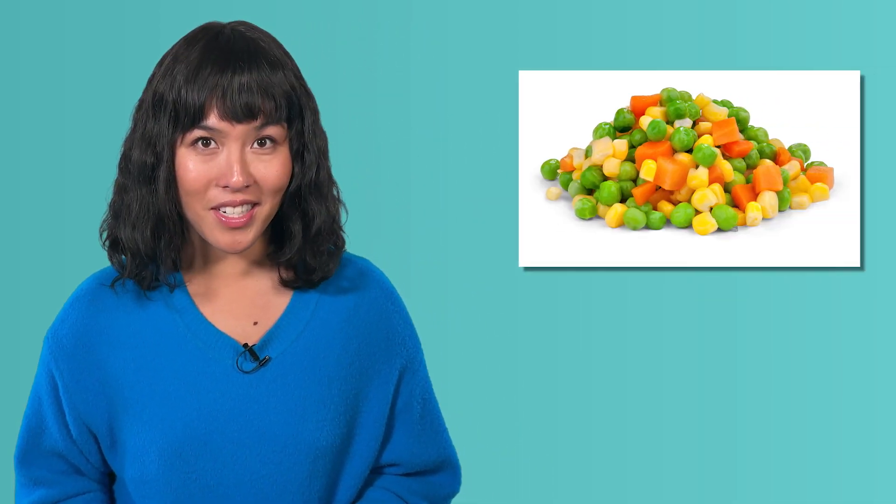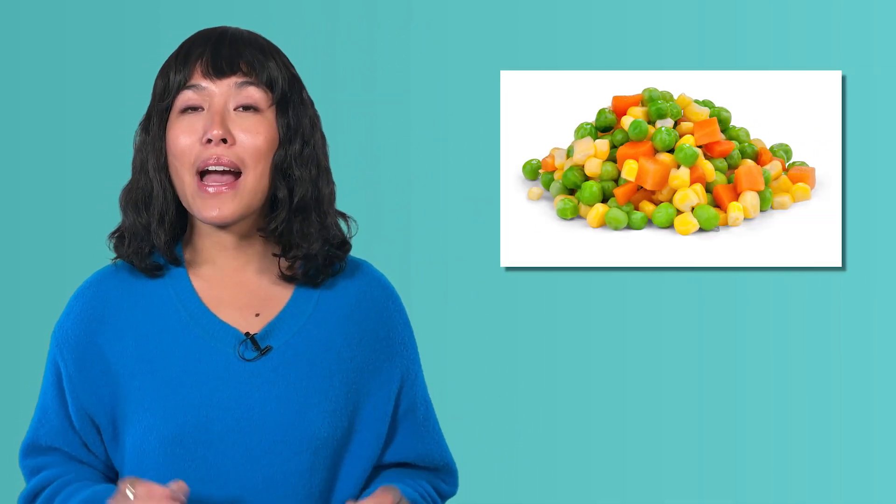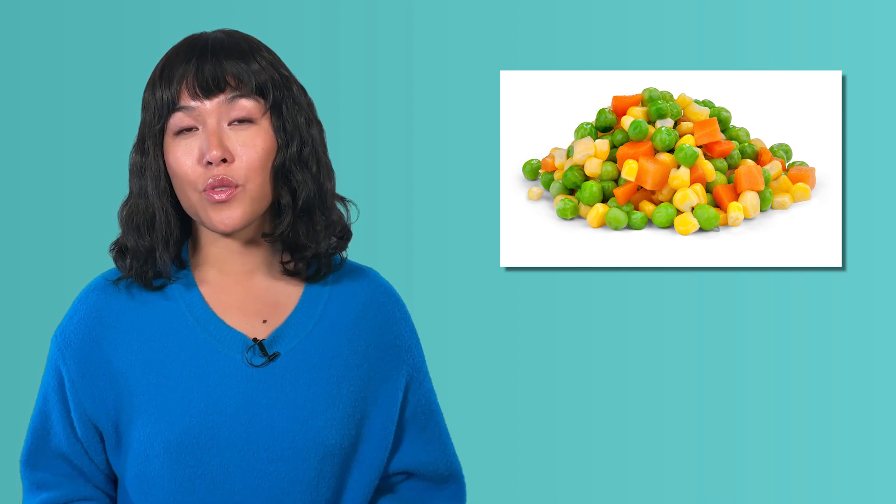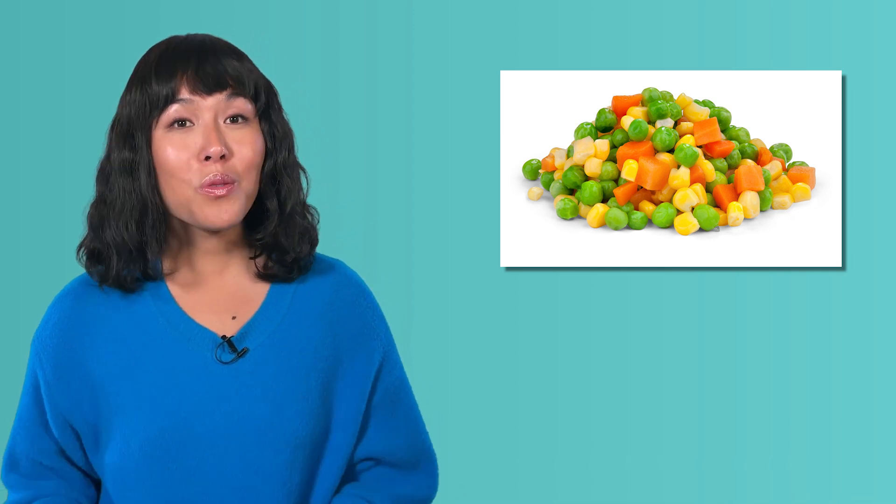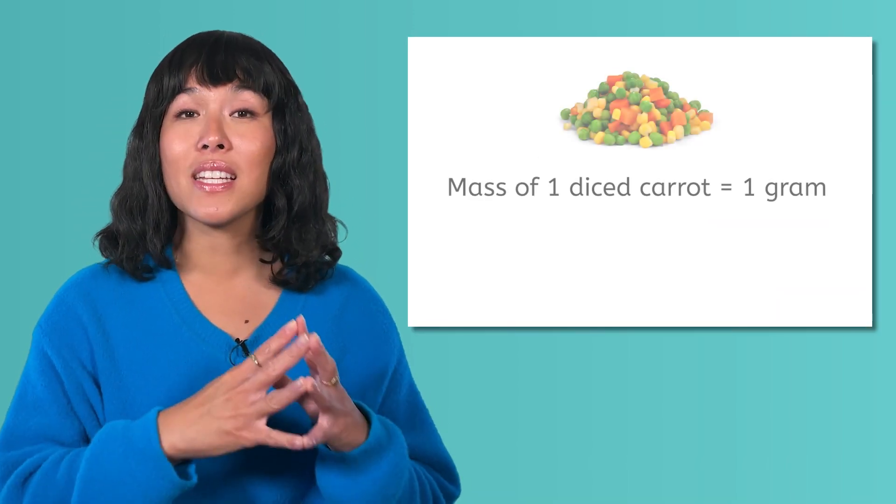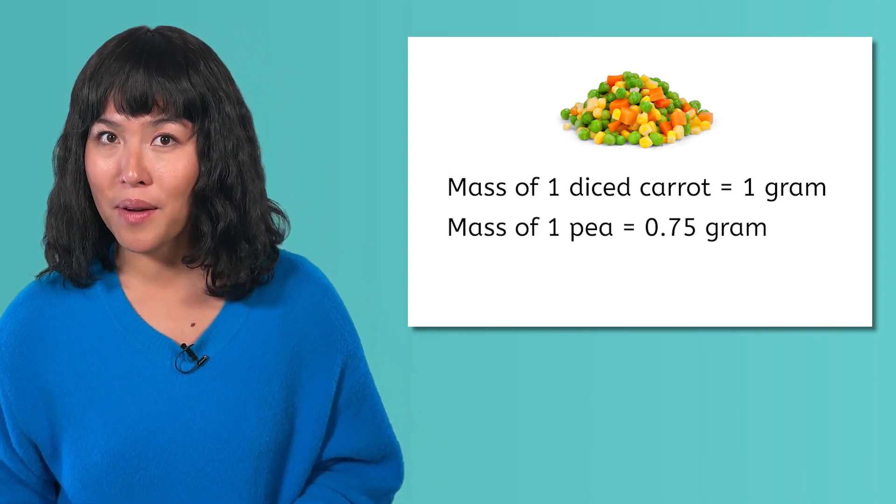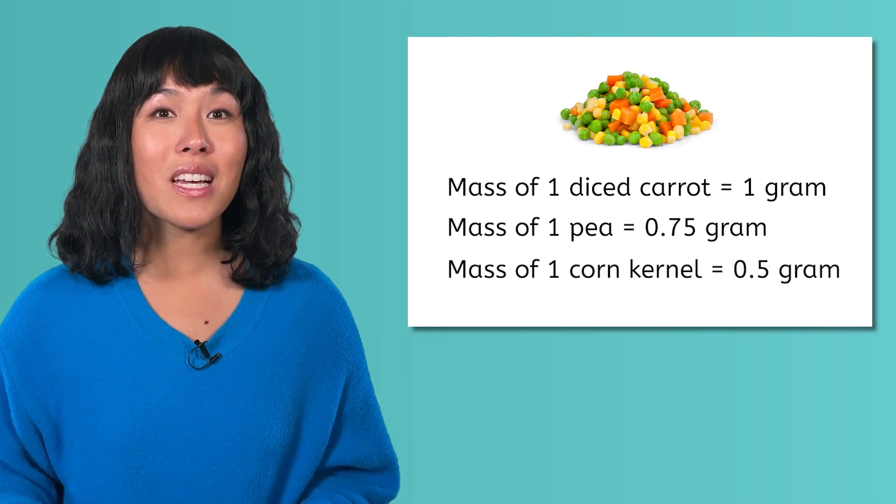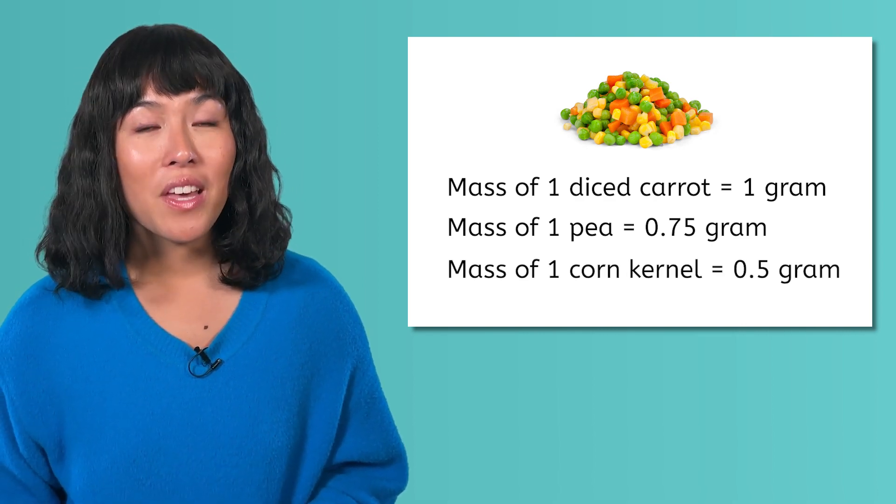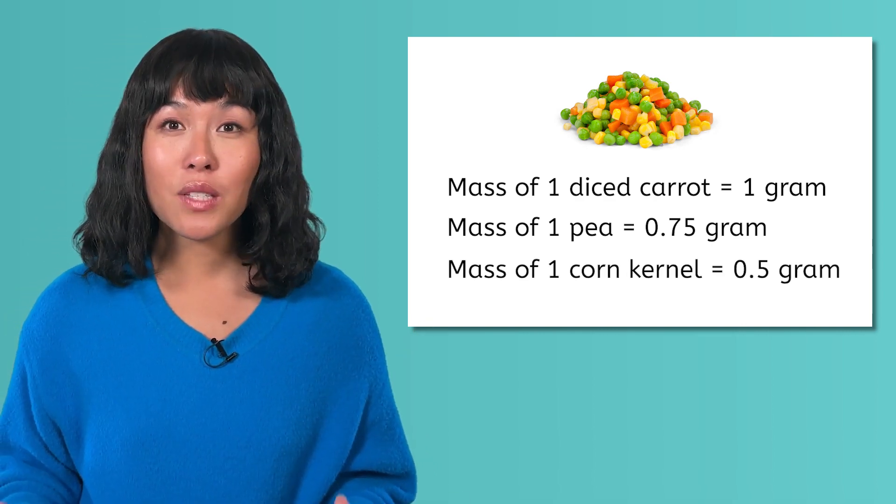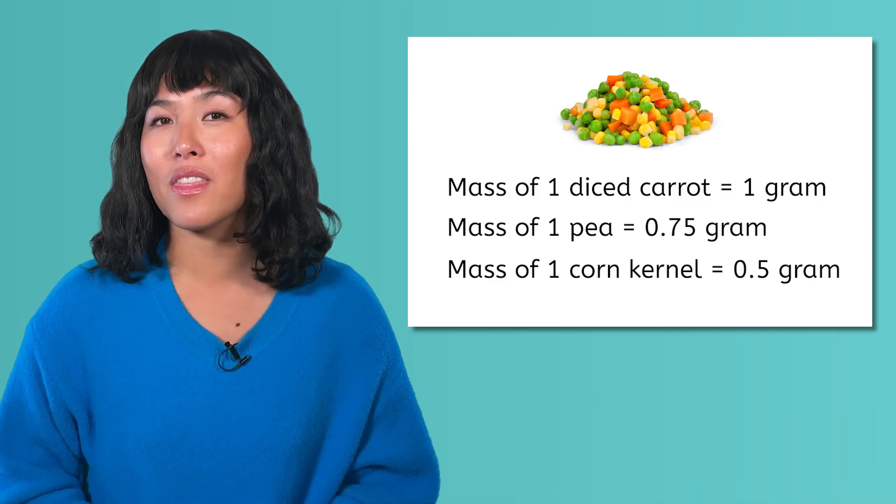Let's go back to the example at the start of this lesson, the one with the frozen veggies. If you knew that the bag had exactly 100 of each veggie, and you also knew that the mass of the diced carrot is 1 gram, the mass of the pea is 0.75 gram, and the mass of the corn is 0.5 gram, you could calculate the average mass of a single piece of vegetable in the bag.